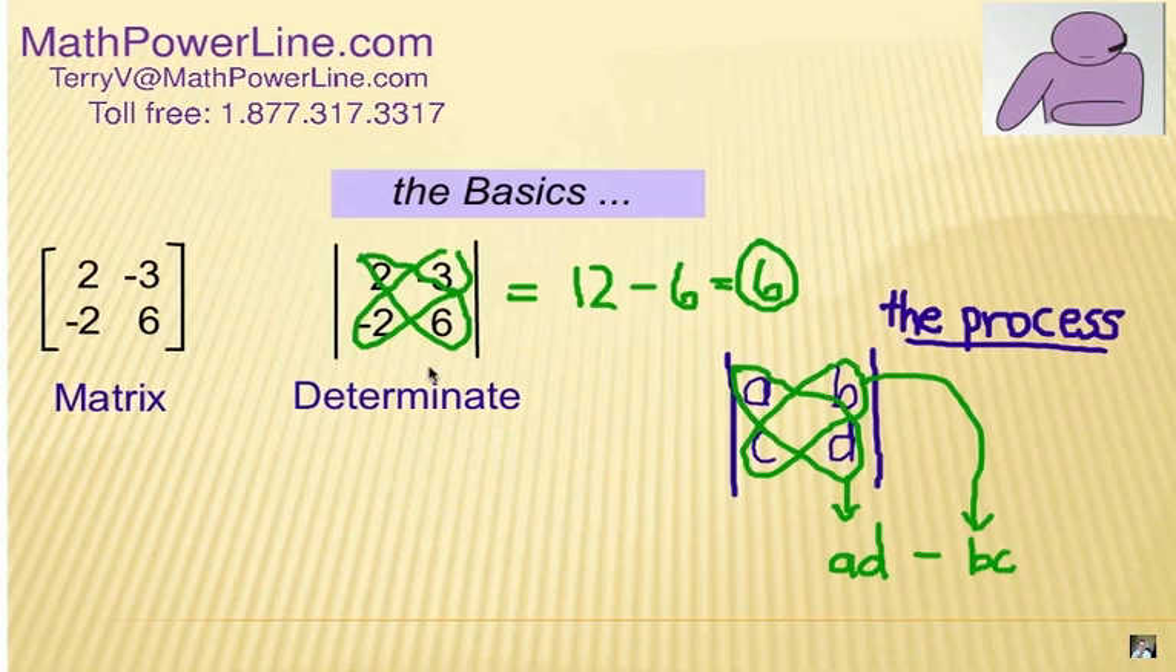Now, remember the process is this. The matrix has brackets around it. It's an arrangement of numbers, and if you have the brackets taken away with just straight lines, normally this is the symbol for instructions about finding the determinate. It's all about the diagonals here. You're going to multiply this diagonal, you're going to multiply this diagonal, and then subtract in that order. And here's the process: AD minus BC. Simple as that.